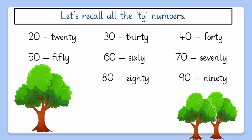Let's recall all the T numbers that we have learned today: 20, 30, 40, 50, 60, 70, 80, and 90.